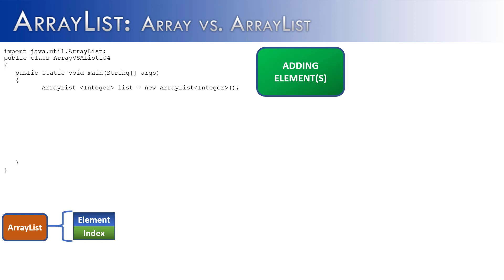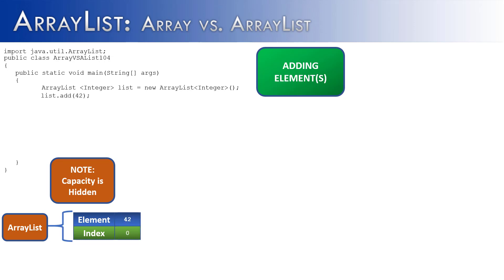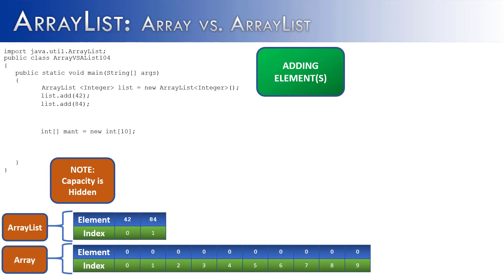Now let's talk about adding elements. With an array list, I use the add method to add values, and I can do this as many times as I'd like, adding as many values to the end as I want. But if I had an array and wanted to add values to the end, I could not do it. An array does not have a built-in way to add elements — you can change or set values inside of it, but you can't actually add new values.